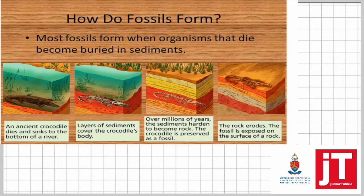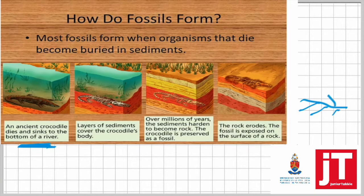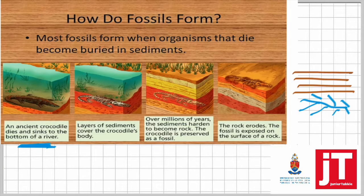What will happen is the organism will first die. The soft parts of the organism, like the flesh, will obviously be decomposed by bacteria, and the remains — which are the bones — will then be left. The bones, or the parts that cannot be decomposed, are then covered by many millions of layers of sediment.